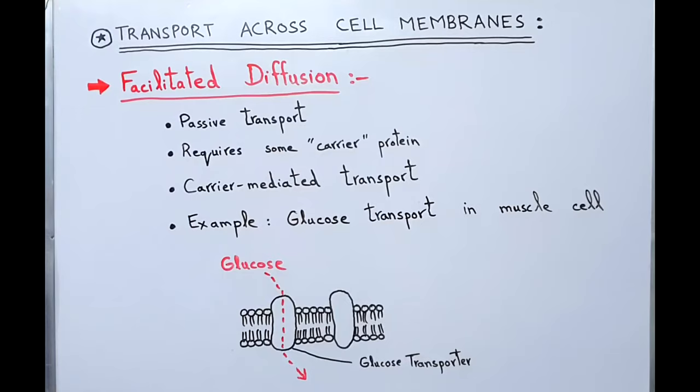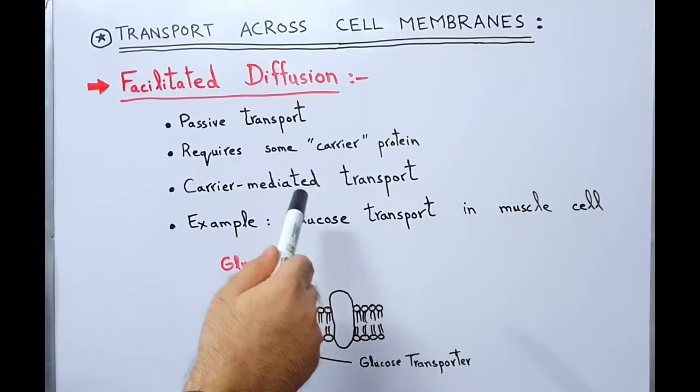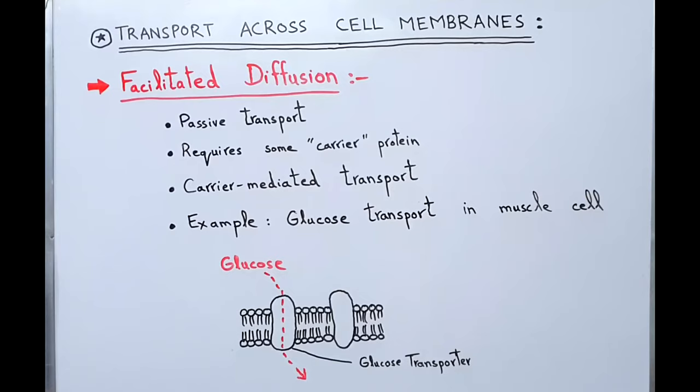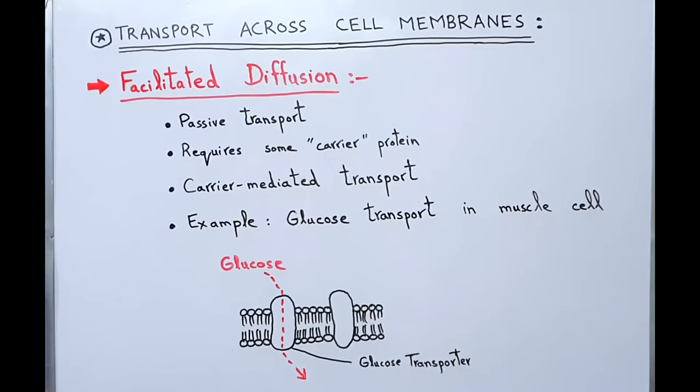Facilitated diffusion is also a passive transport, which means energy is not required. It requires some carrier protein, and is therefore also called carrier-mediated transport. It cannot occur directly through the cell membrane but occurs through carrier proteins or channels. It occurs from higher concentration gradient towards lower concentration gradient — it is a downhill movement, but requires a carrier protein.